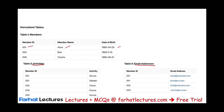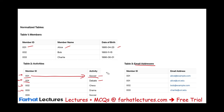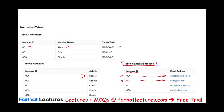Therefore, what we have to do is create a separate activities table. Activities will have entries like soccer, debate, chess, drama. Each member ID gets its own row per activity: 001-soccer, 001-debate, 002-chess, 003-drama, 003-soccer. Each row is unique, and we are still complying with 1NF in these tables. The reason we do this is because we might have many activities, so it's better to have an activity table — and we will link this later on in 2NF. Same thing for email addresses: since any particular member ID could have more than one email address, we have a separate email addresses table. 001 has two email addresses, and could have three or four. Now it's much easier to manage and scale the database.